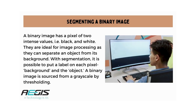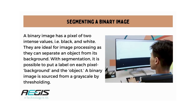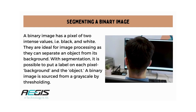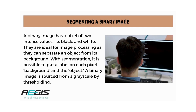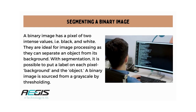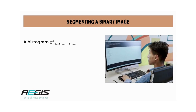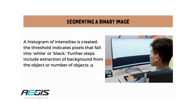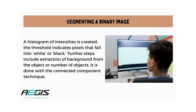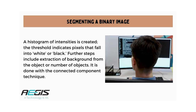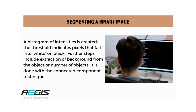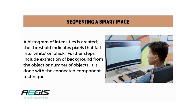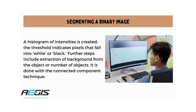Binary images are ideal for image processing as they can separate an object from its background. With segmentation, it is possible to put a label on each pixel — background and the object. A binary image is sourced from a grayscale image by thresholding. A histogram of intensities is created; the threshold indicates pixels that fall into white or black. Further steps include extraction of the background from the object or number of objects, done with the connected component technique.